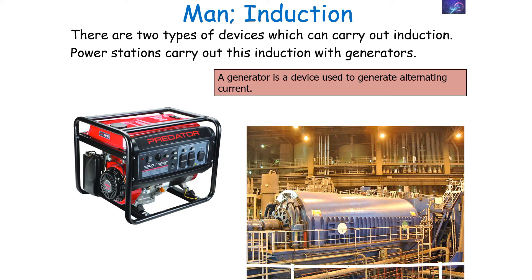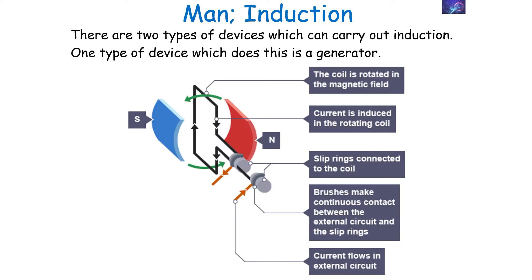There are two types of device which can carry out electromagnetic induction. The first is the generator, which is a device used to generate alternating current. This generator works as there's a coil which is rotated in a magnetic field. The current is then induced in this rotating coil, because slip rings are connected to the coil, which allows them to make continuous contact between a circuit and the slip rings, allowing current to flow in an external circuit.